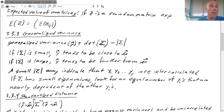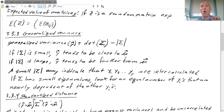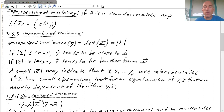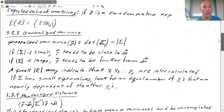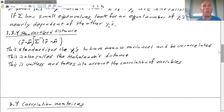If the covariance matrix has small eigenvalues, we look for an equal number of Y's that are nearly linearly dependent on the other Y's. If there are three eigenvalues really close to zero, we expect three of those Y's to be close to being literally dependent on the other variables. This follows directly from the product-of-eigenvalues formula for determinants.